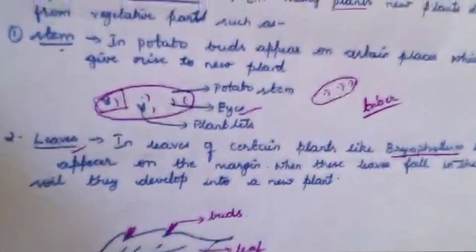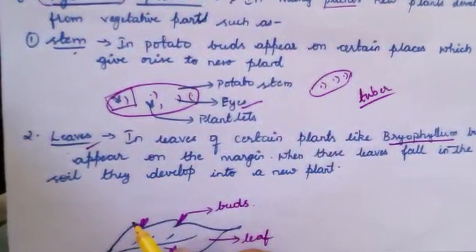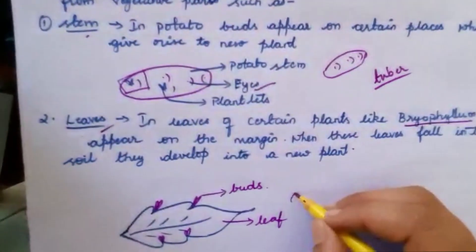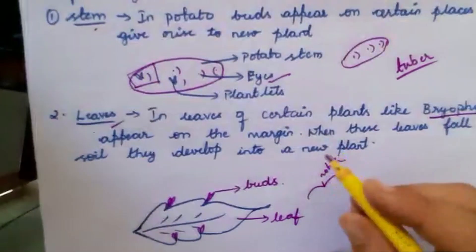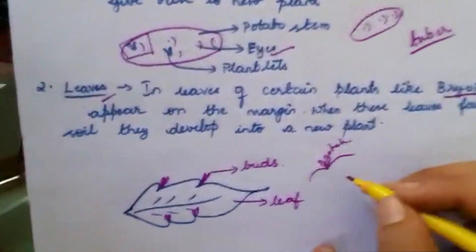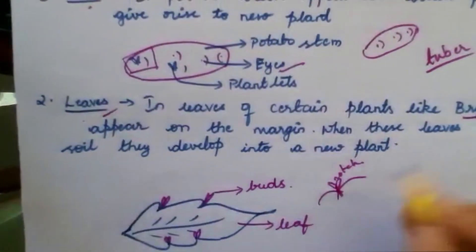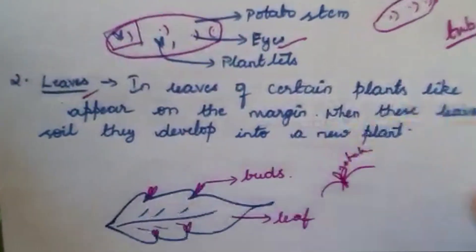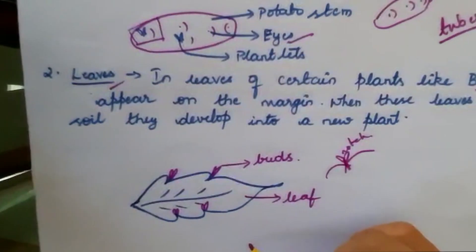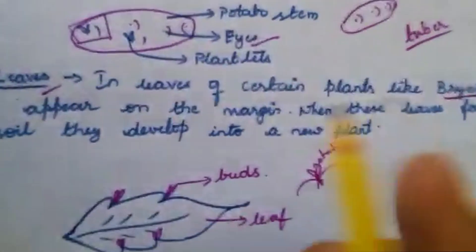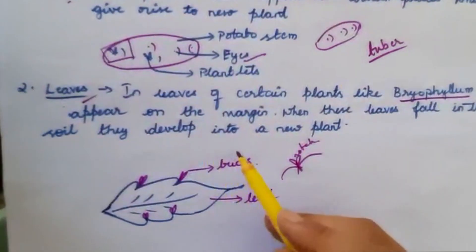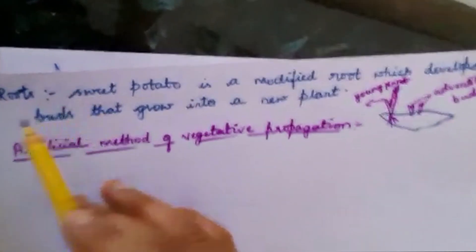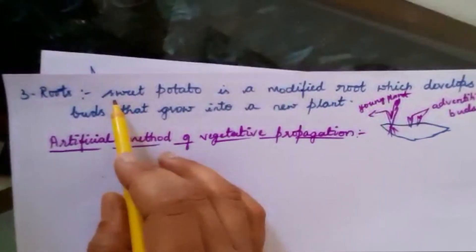New cells grow — that is also a type of regeneration. For example, in a lizard, if its tail is cut off, after a few days you observe that the same lizard has developed a new tail. That is also regeneration. There are different levels of regeneration, but if we cut each part, each piece can grow into a complete individual — the whole organism.